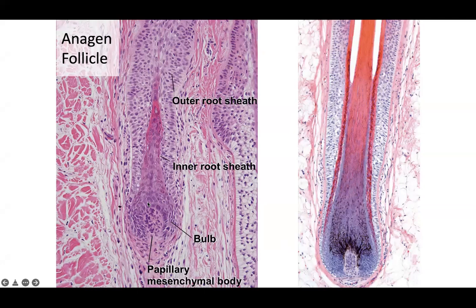Looking at the dermal papilla — the papillary mesenchymal body — at the bulb of an anagen hair follicle, you can see the outer root sheath and inner root sheath clearly. On cross-section, the fully keratinized inner root sheath is visible in the stem area, with the Adamson's fringe showing loss of keratohyalin granules. The bulge is the transition zone from the stem to the area where keratohyalin and tricholemmal keratinization occur.